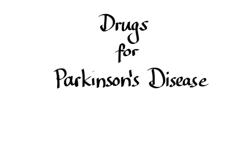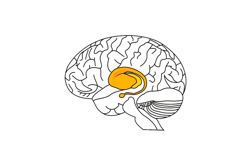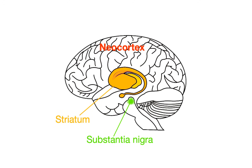Parkinson's disease is a neurological disorder that results in a progressive loss of coordination and movement. The neurons responsible for coordinating movement are located in a part of the brain called the striatum, which receives information from two major sources: the neocortex and a region known as the substantia nigra. The cortex relays sensory information as well as plans for future action, while the substantia nigra sends dopamine that helps to coordinate all of the inputs.